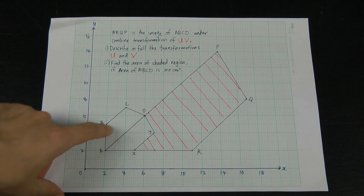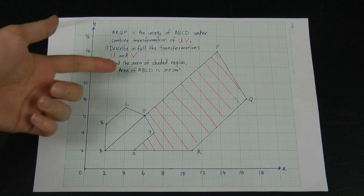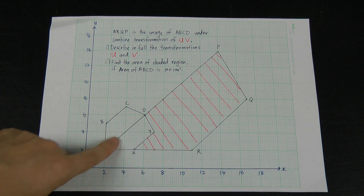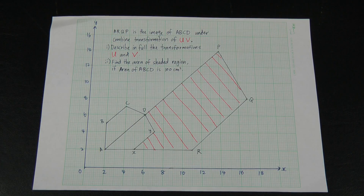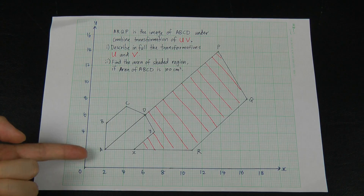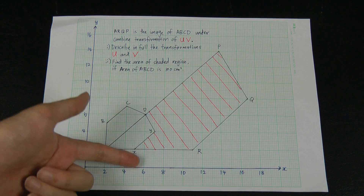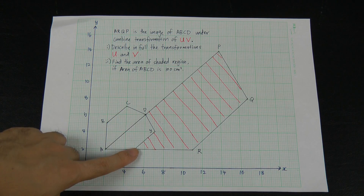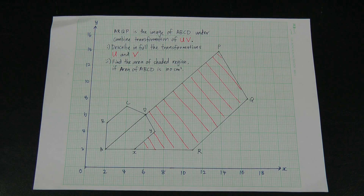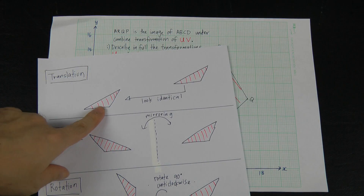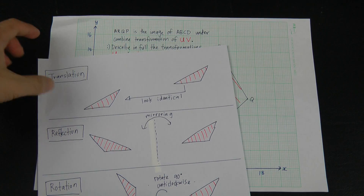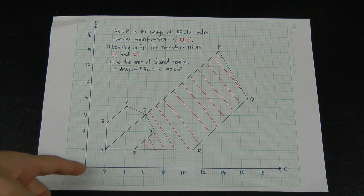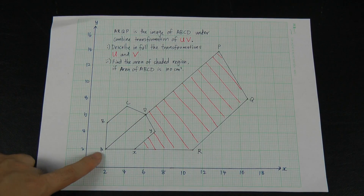I can see that this small trapezium reflects to this one, then it's enlarged to become the big one. Going from ABCD to AXYD, this is a reflection — it's impossible for this to be a rotation, and it's not a translation because I said translation means the object must stay identical and the same. So this one is obviously reflection.